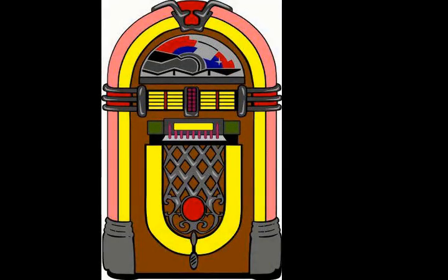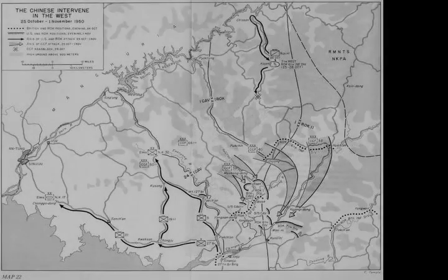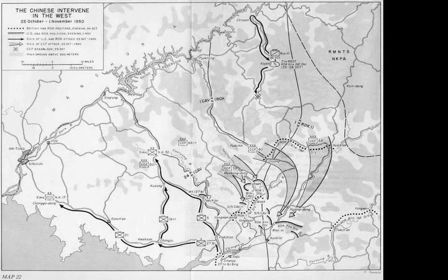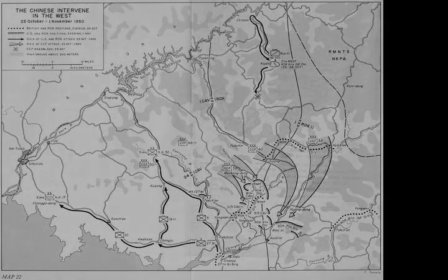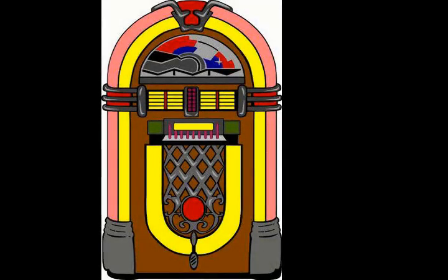On the 24th of October, the ROK 6th Infantry Division of II Corps advanced westward from Huiken, and Onjong was captured on the same day. From Onjong, the ROK 7th Infantry Regiment, 6th Infantry Division turned north and advanced towards Kojang, while the ROK 2nd Infantry Regiment, 6th Infantry Division planned to advance northwest from Onjong towards Pukjin. Because the UN command expected no opposition from the destroyed KPA, the advances were not coordinated between the UN units.